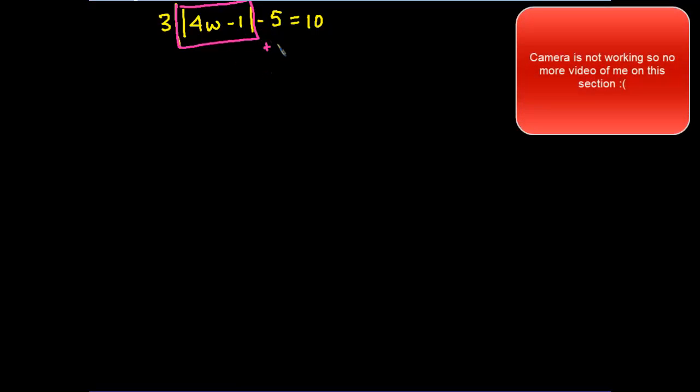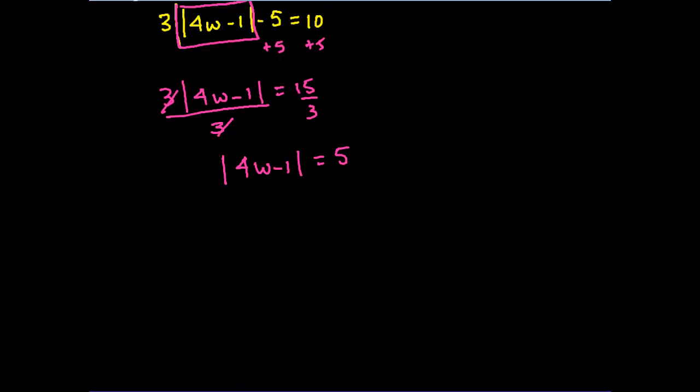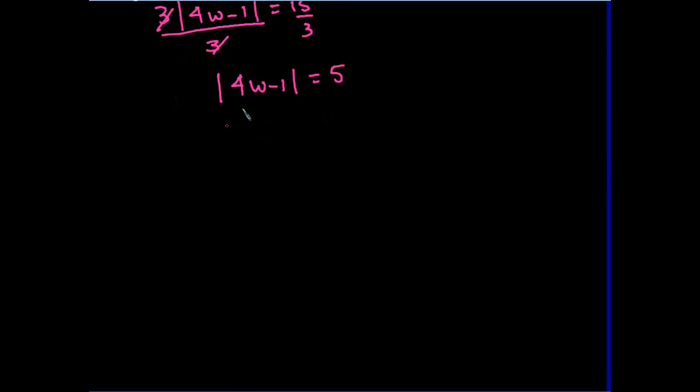So here we're going to add 5 to both sides. So I have 3 times the absolute value of 4w minus 1 is equal to 15. Now I can divide. This is like, you know, again, I'm trying to get this by itself. So I can divide this by 3 so that those reduce. I'm going to divide both sides by 3. So I'm going to have the absolute value of 4w minus 1 is equal to 5.